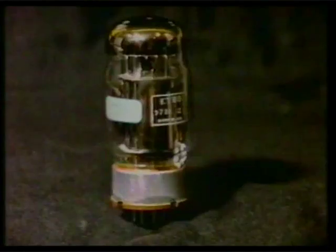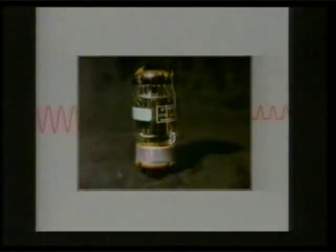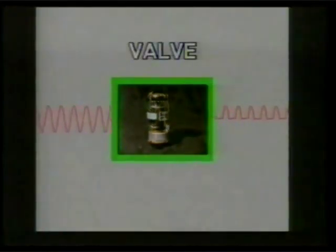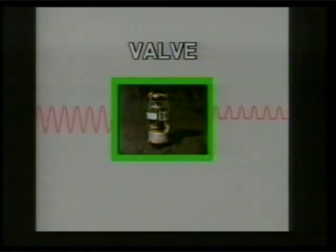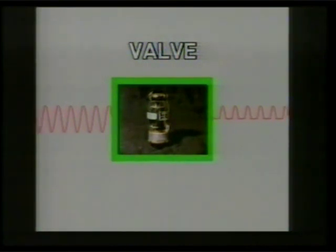Early computers used valves. Valves are electrical components which change the signals fed into them. In this case, the signal is being chopped in half. That's called rectification.